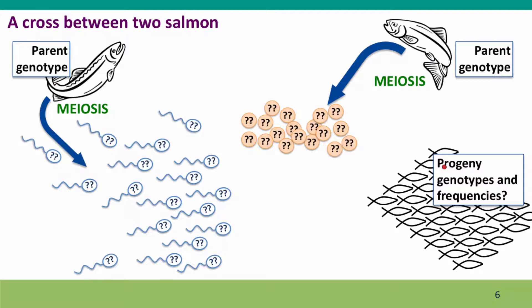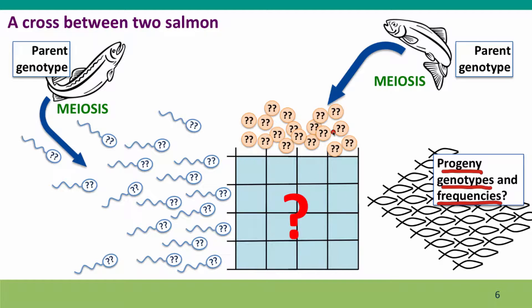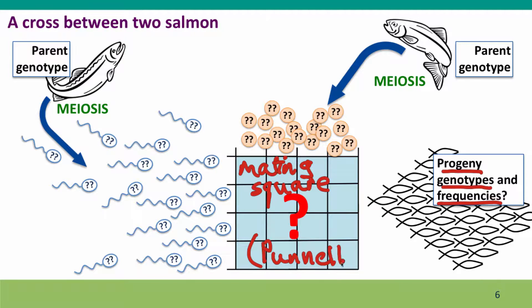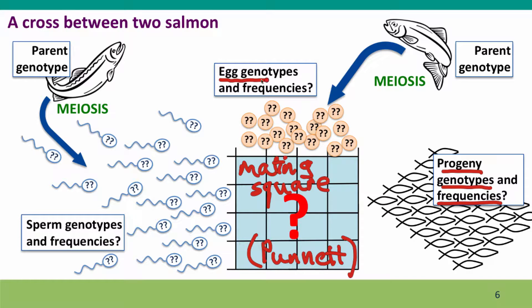What we want to know is the progeny genotypes and the frequencies of these genotypes. To get this, we need to understand the process of mating by which the eggs and sperm come together. To think about this process, we're going to use a diagram called a mating square, also called a Punnett square after the geneticist who first popularized using it. This diagram makes it easy to think about how gametes come together to form the progeny. But we still first need to know the genotypes and frequencies of the gametes — information you're already able to determine from what we've covered in this module.